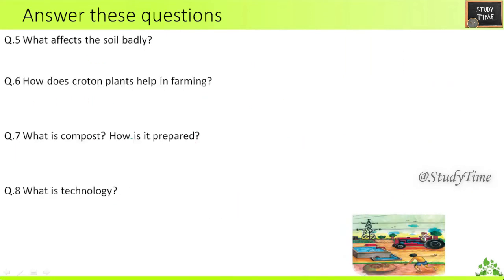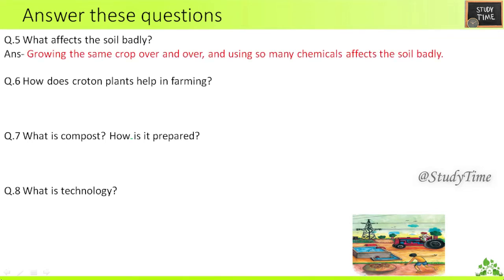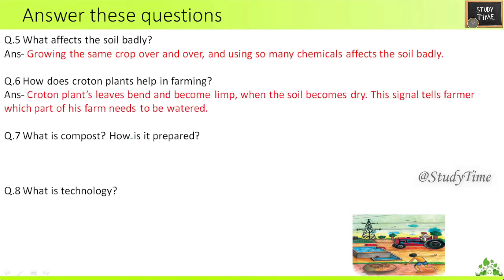Fifth question — what affects the soil badly? Growing the same crop over and over and using too many chemicals affect the soil badly. Sixth question — how does the croton plant help in farming? Croton plant leaves bend and become limp when the soil becomes dry; this signal tells the farmer which part of his farm needs to be watered.